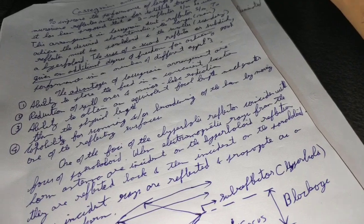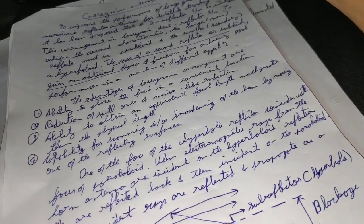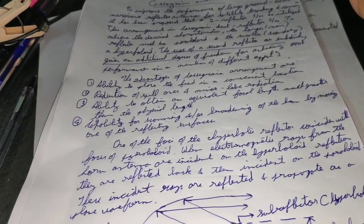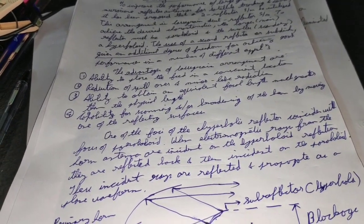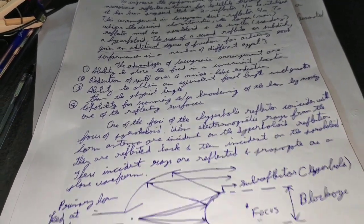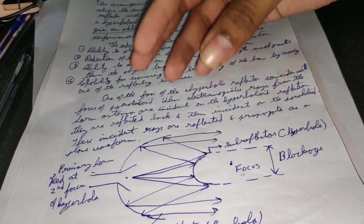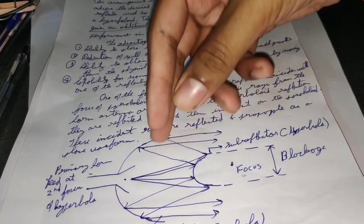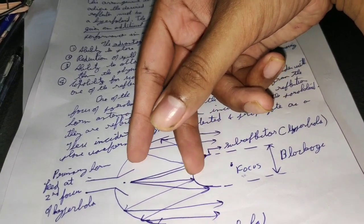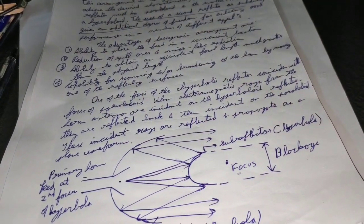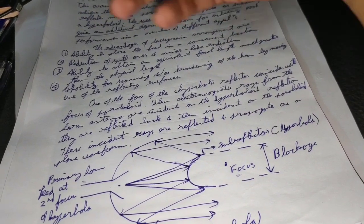The third advantage is the ability to obtain an equivalent focal length much greater than the physical length. The fourth advantage is the capability for scanning and broadening of the beam by moving one of the reflecting surfaces. Since we have two reflecting surfaces, by moving them we can either broaden or reduce the beam.